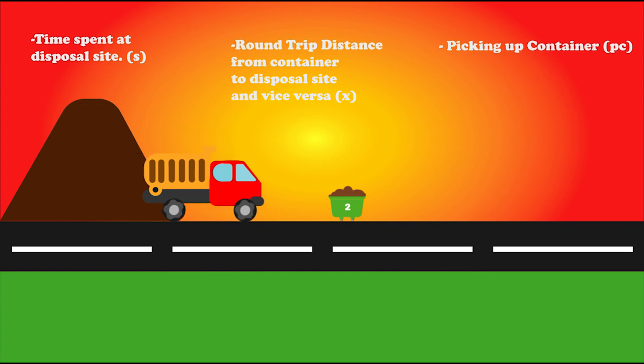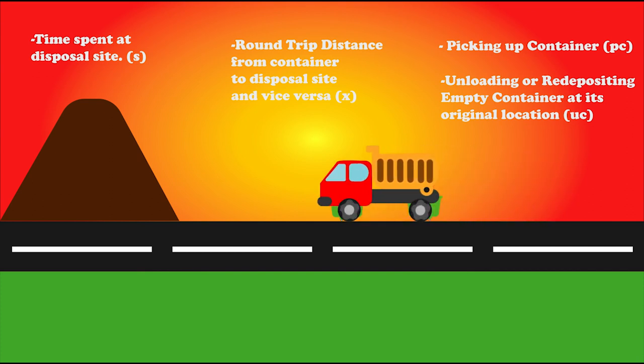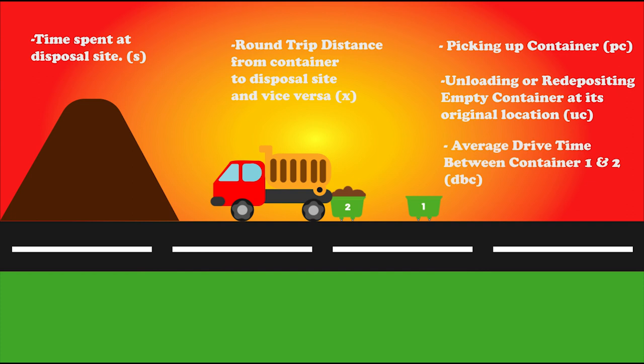After dumping, the truck returns to place container 1 in its original position. The time taken to place container 1 back in its original location is termed as unloading container time, denoted as UC. Now, if there are more than one waste containers, the truck travels to the next container — in this case, container 2 — to pick up the waste. Thus, the average time taken for the truck to travel between different containers is termed as DBC, that is, the average time required to travel between containers.